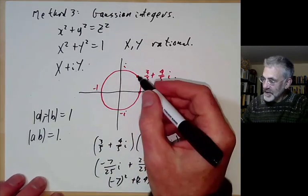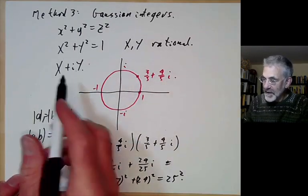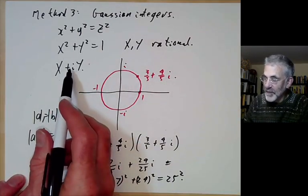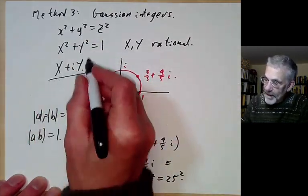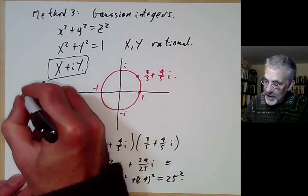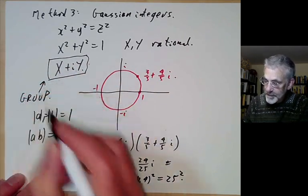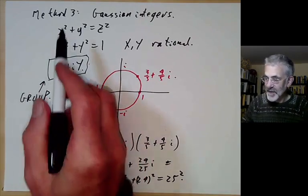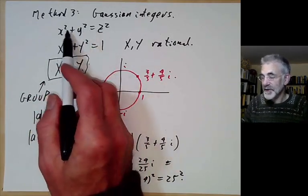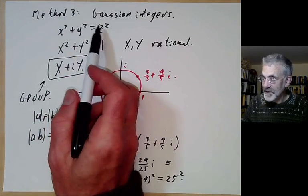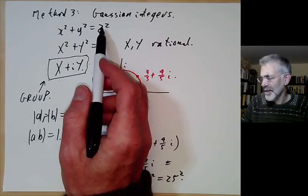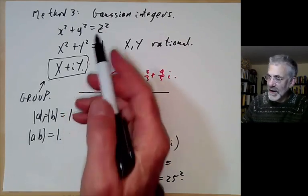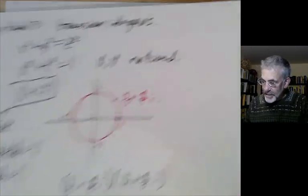Since multiplication of complex numbers is associative and has inverses, the solutions of this equation actually form a group. In other words, the co-prime solutions of Pythagoras's equation more or less form a group, at least if you insist that z is positive. That's the third method.